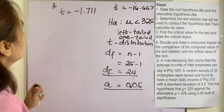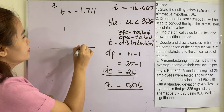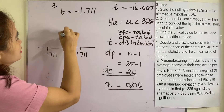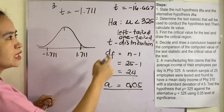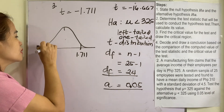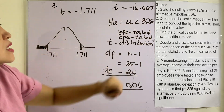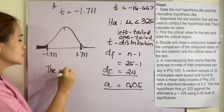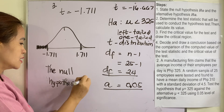Drawing the critical region: since it is less than, the region of rejection is on the left side. The critical value is negative 1.711. Where does negative 16.667 fall? It falls in the rejection region. Therefore, the null hypothesis is rejected.